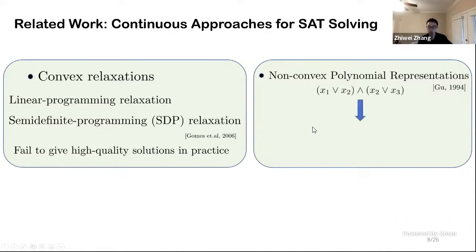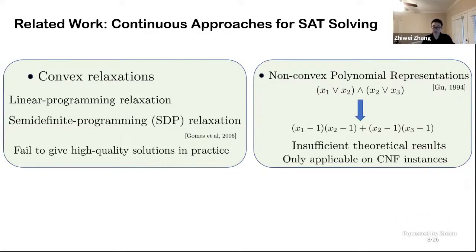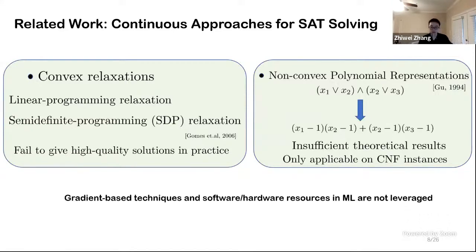On the right, the CNF formula is usually transformed into a sum of product polynomial. But in the previous literature, they fail to give sufficient theoretical analysis about this transformation. And also note that this transform only applies on CNF format, while we want to solve non-CNF constraints as well. One point that both of those directions are missing is the success of gradient-based techniques achieved in machine learning. We believe that those advantages and new techniques are not fully leveraged in the set community, so we want to explore the potential of continuous local search.